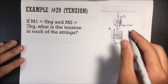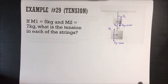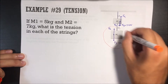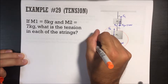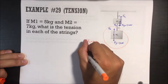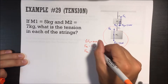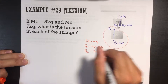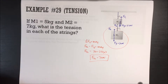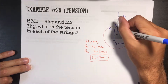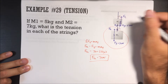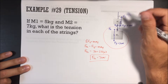It's easier to find tension 2 first. Since the bottom box is not moving, sum of all forces in y equals mass times acceleration in y: force of tension 2 up minus force of gravity down equals mass times 0. Force of tension 2 minus 70 equals 0, so force of tension 2 equals 70 newtons. What's important to know is that this string pulls up on the bottom box with 70 newtons, but the same string pulls down on the top box with 70 newtons. Even though it's the same piece of string, it can pull in different directions.